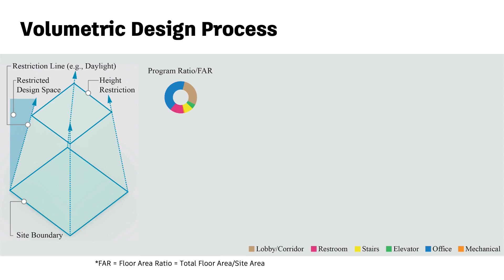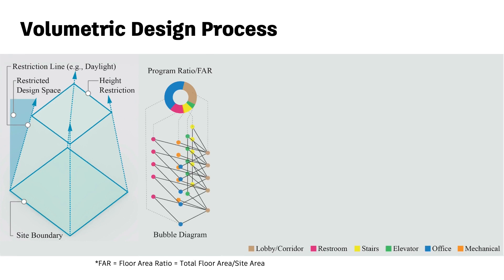For example, 40% of the floor area might be used as an office, and so on. Based on the design space, FAR, and program ratio, the architect will then draw a bubble diagram, which is a graph representing how rooms of different program types are allocated and connected. For example, if a corridor is connected with a restaurant, it means a person can walk from the corridor to the restaurant through a door.